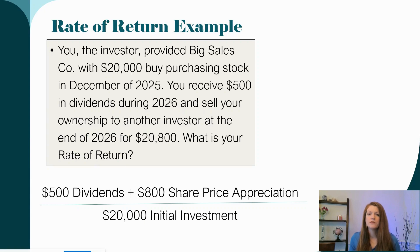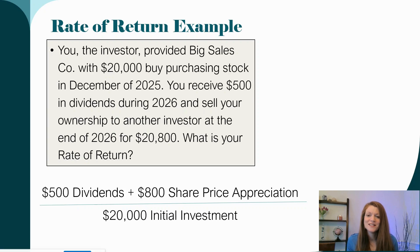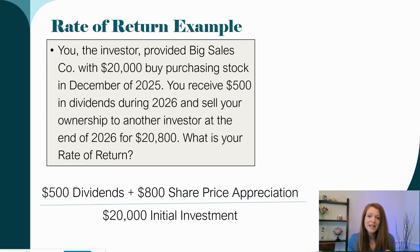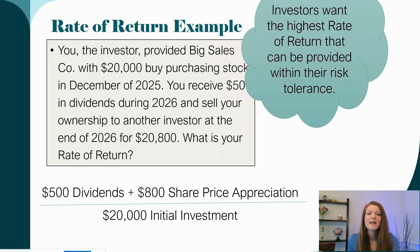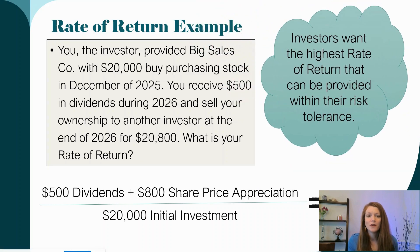Let me look at an example so we can work through this together. You, the investor, provided Big Sales Company with $20,000 when purchasing stock in December of 2025. You received $500 in dividends during 2026, and you sell your ownership to another investor at the end of 2026 for $20,800. So what's the rate of return? We take $500 in dividends plus $800 in share price appreciation — they invested $20,000 and sold for $20,800, so the difference is $800. Divide by that initial $20,000 investment, and we get a 6.5% return, which is a good bit higher than a regular savings account or even a CD most of the time.